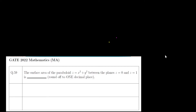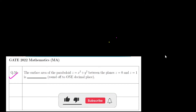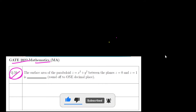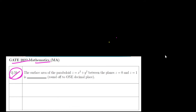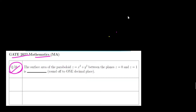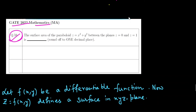Hello everyone, welcome back to my channel Matrix Matrix. Today in this video we are solving a problem from calculus of GATE 2022 Mathematics. This is question number 59 from calculus, which is from the topic of surface area of the paraboloid. The question says: find the surface area of the paraboloid z = x² + y² between the planes z = 0 and z = 1.